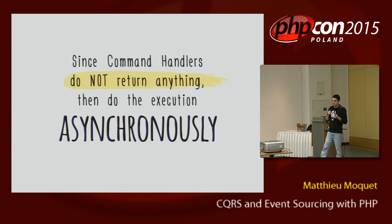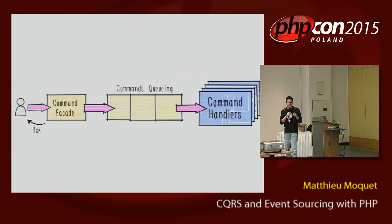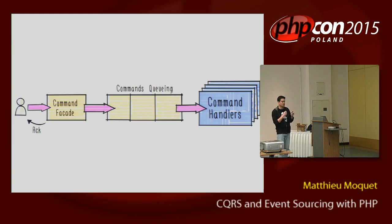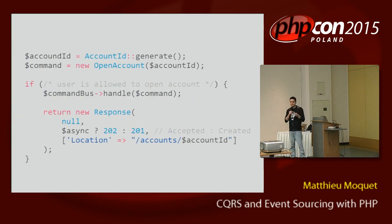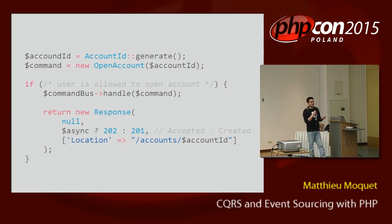Now that every side of the application — read and write — are completely separated, it's way better to optimize each part separately. For instance, since I don't expect any data back from my write operation, I can do all the execution asynchronously. You may have heard of RabbitMQ, Kafka, and so on — it's typically that kind of technology you can use quite easily. A user sends their intention through a command, I validate it and handle it synchronously or asynchronously depending on your need, and I can easily respond to the user quickly.